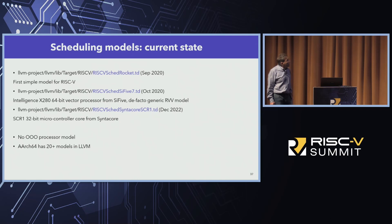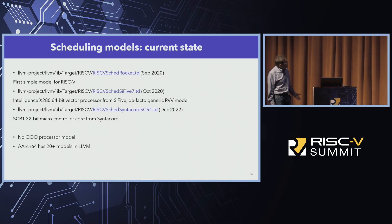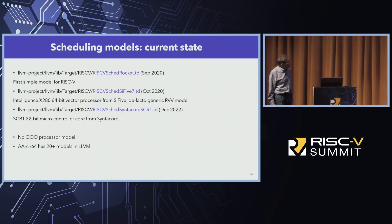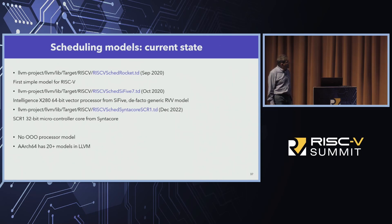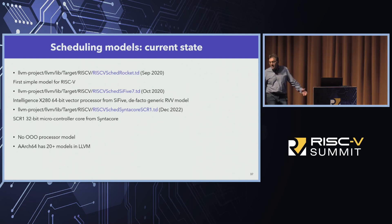Let's start with the scheduling model and what is the current state. In the LLVM upstream compiler, there are only three models. The first is a very simple model for RISC-V. The second one came from SiFive and actually modeled the SiFive X280 processor — it is a production-quality model and right now serves as the de facto RISC-V generic model. There is also a 32-bit microcontroller model from Syntacore. Note that there is no model for an out-of-order processor, and we know that out-of-order processors deliver the highest performance, so we definitely need to have one soon.